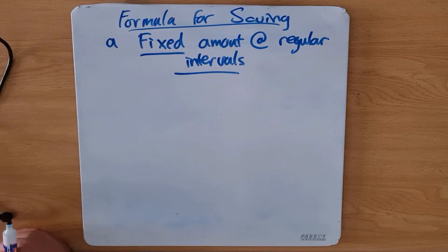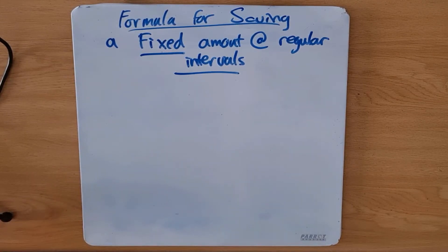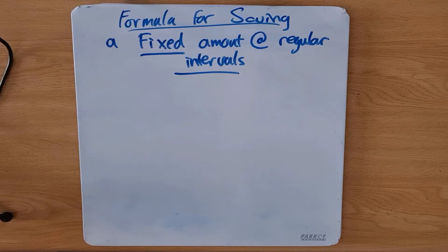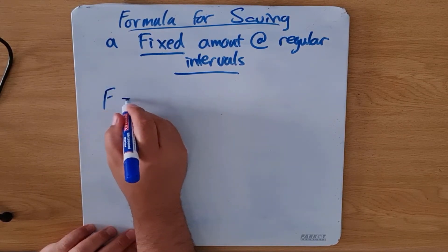Good day and welcome to today's video, in which we are going to be talking specifically about the formula you're going to be using that helps us calculate savings for people who are saving a fixed amount of money at regular intervals. For example, a person wanting to save 250 rand over the next 24 to 36 months at a particular interest rate. There has to be a formula to work that out, and this is that formula.